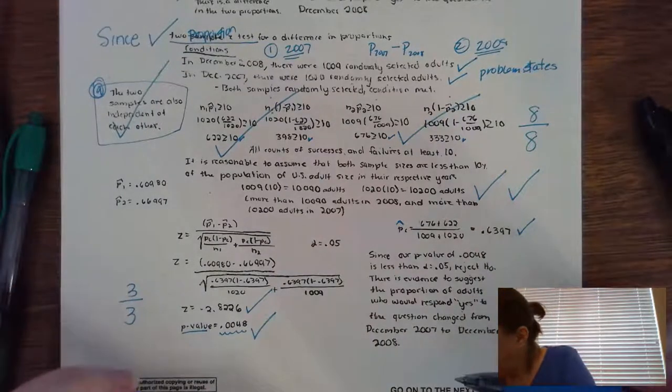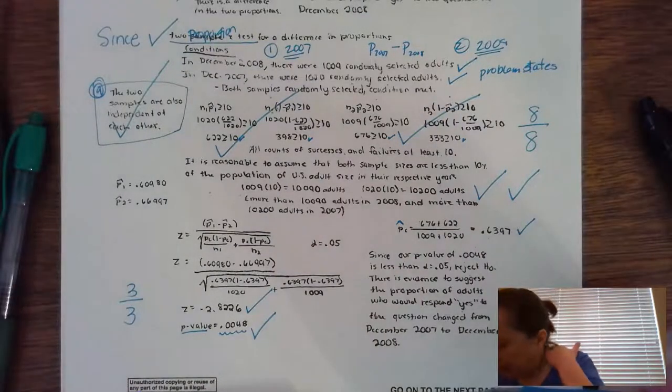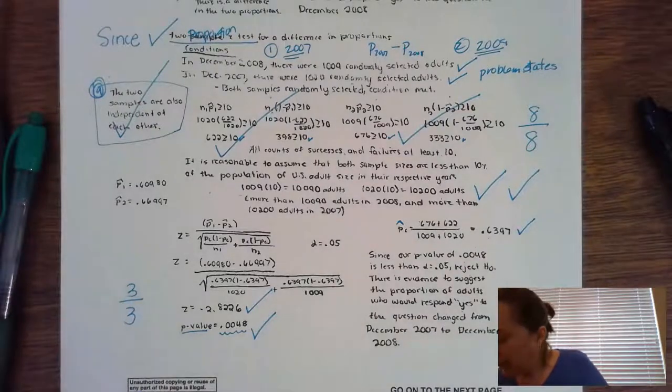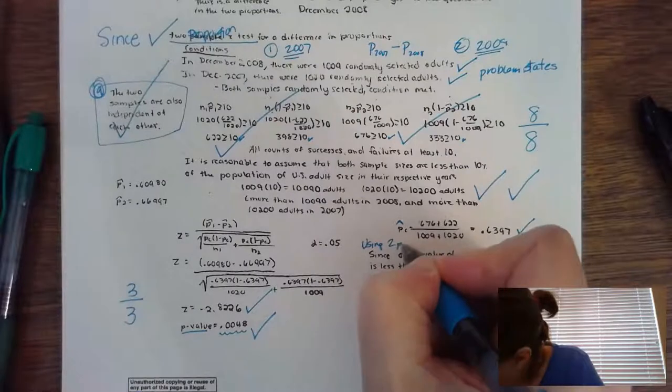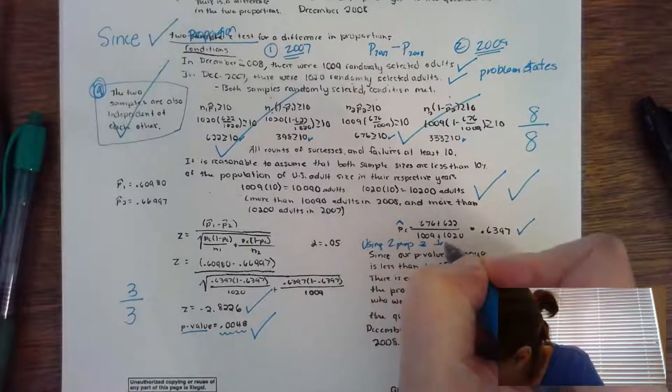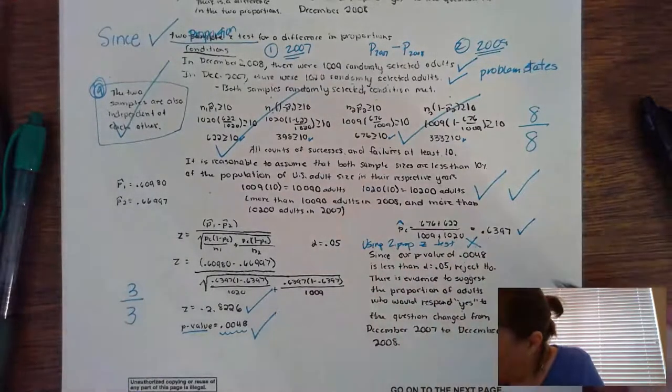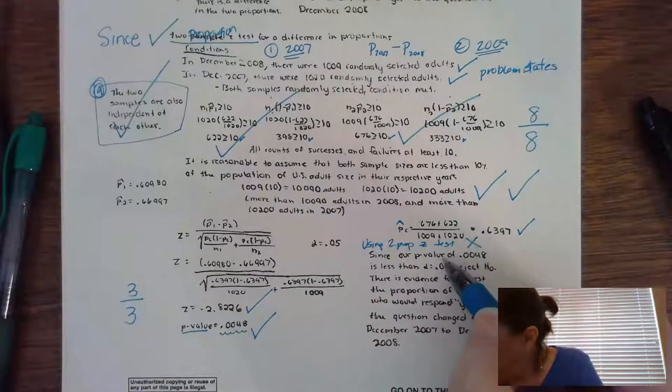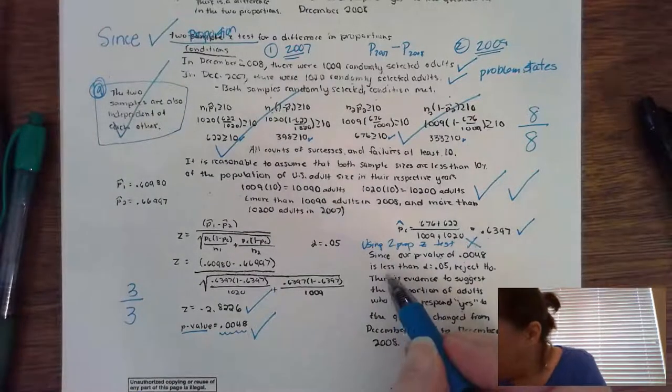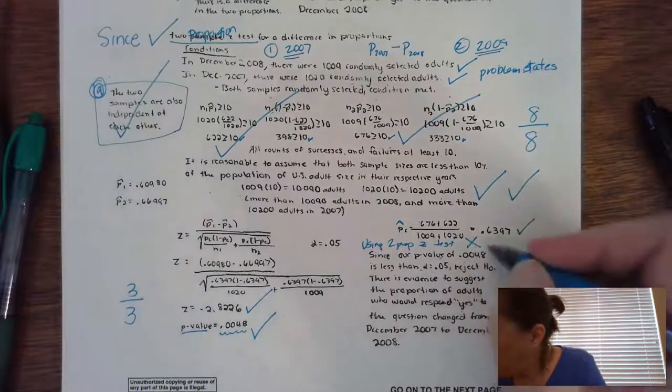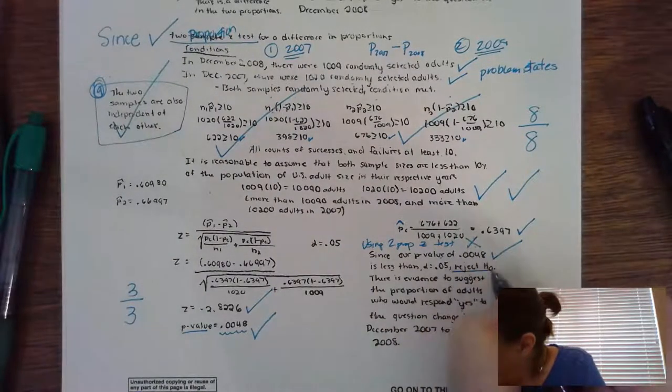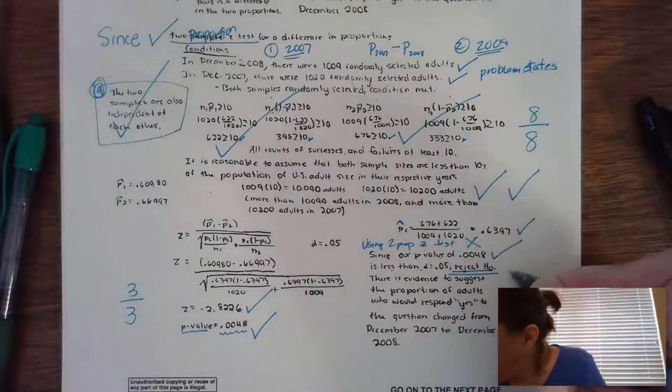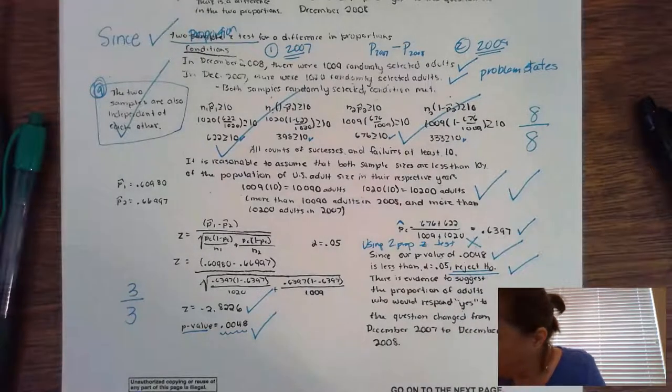The last thing we're going to check is the conclusion. The first thing that I'm going to need to see here is using a 2 proportion Z test. That is missing. You need to then show your P value, state your P value, and say that it's less than 0.05. Check. The next check is for, you need to make sure that you, I reject the H0. Check.